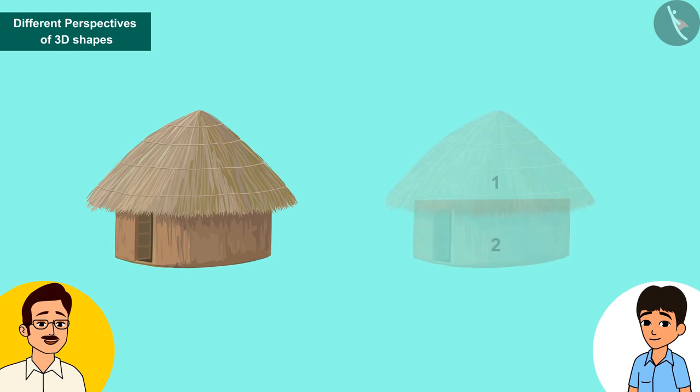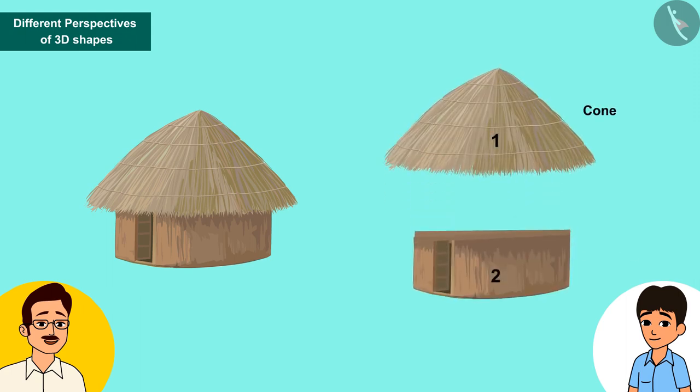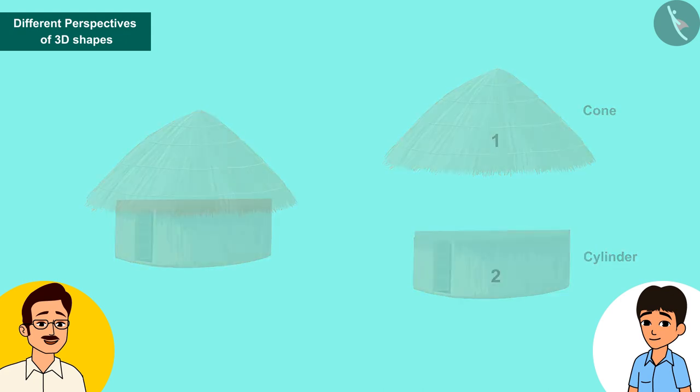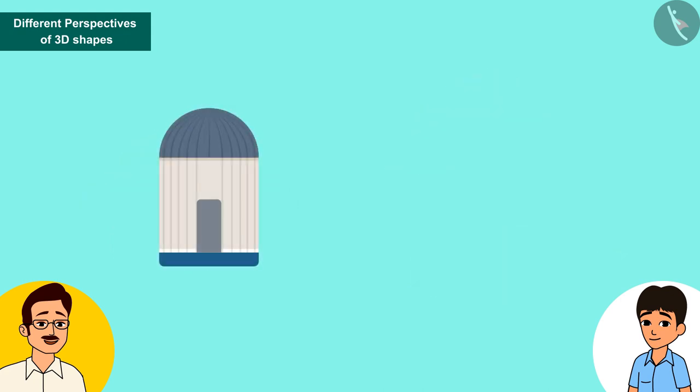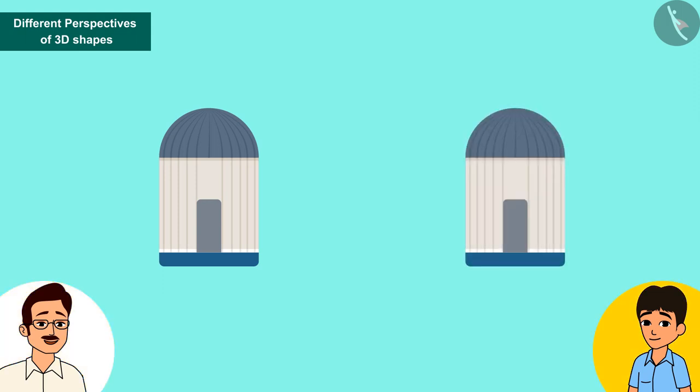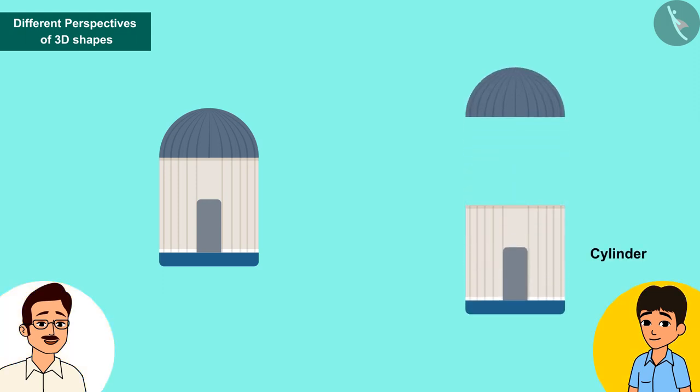Similarly, this hut is made of a combination of a cone and a cylinder. Here, Raghav, now what can you tell about this warehouse? Father, its lower part is a cylinder and the upper part is a hemisphere. Well done, you have learned very quickly.